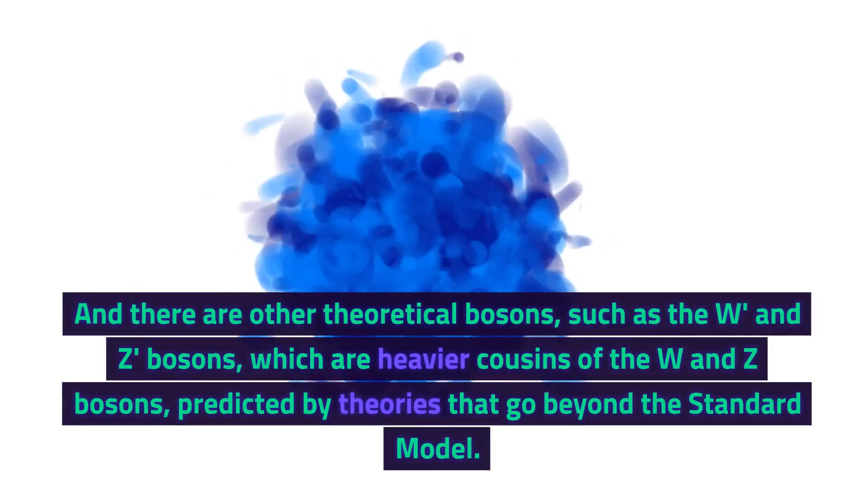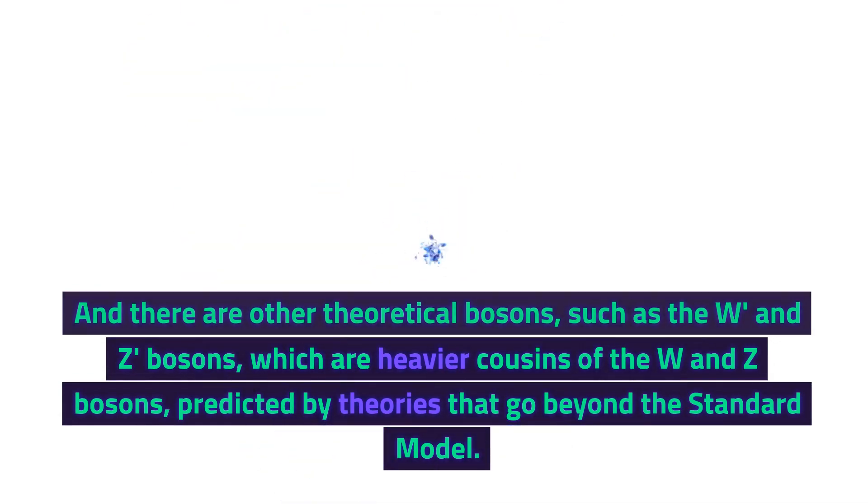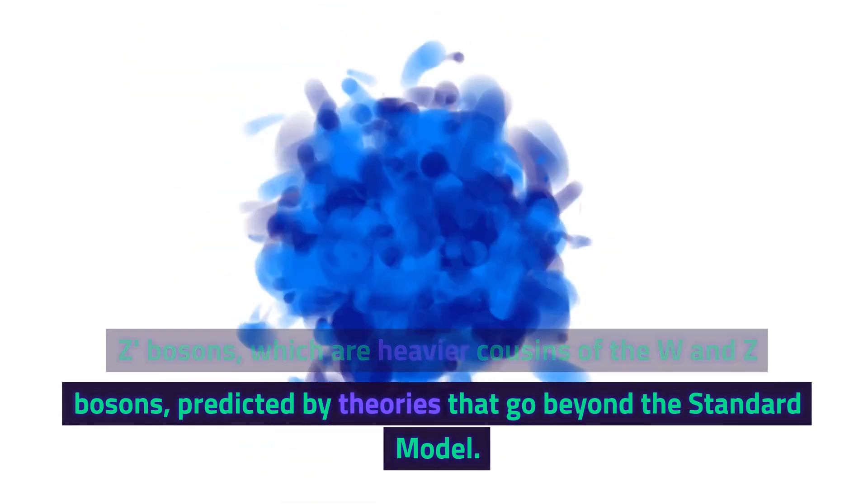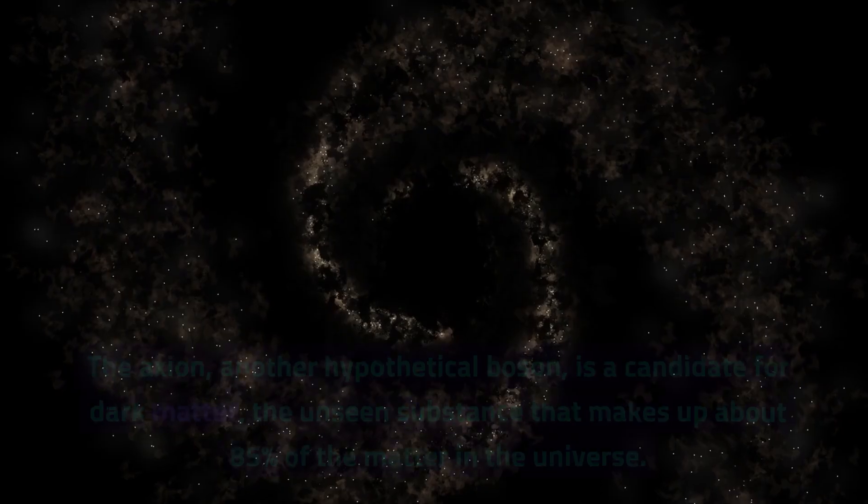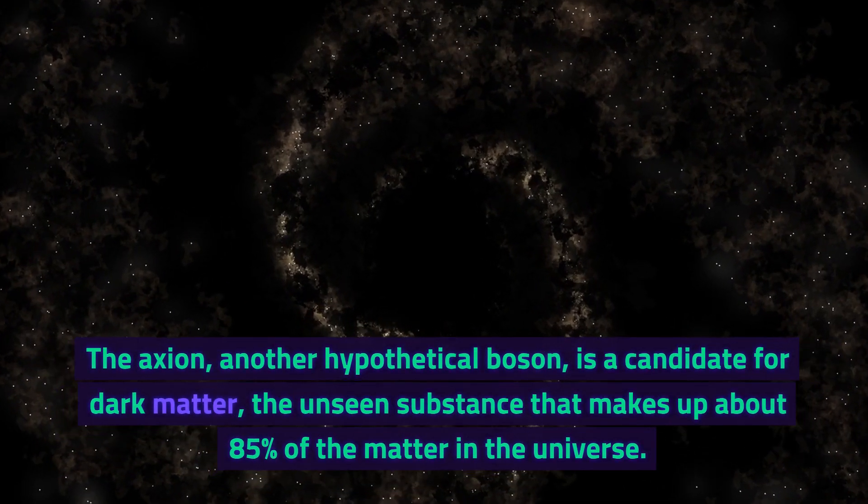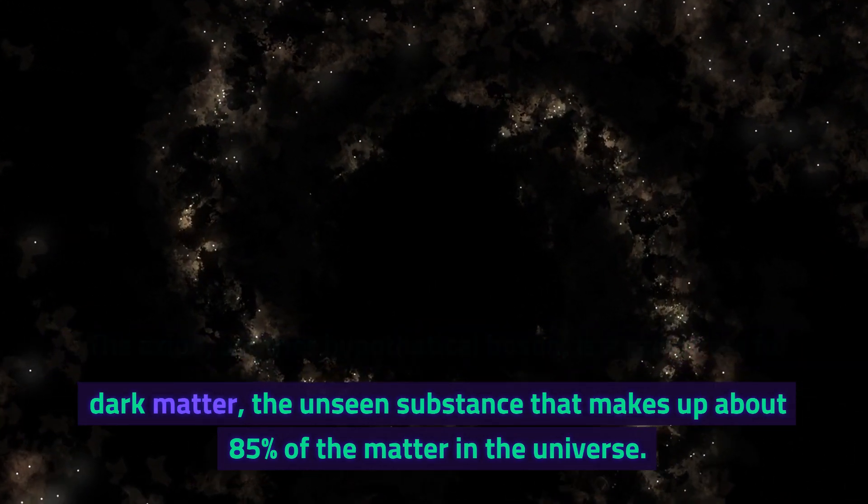And there are other theoretical bosons, such as the W prime and Z prime bosons, which are heavier cousins of the W and Z bosons, predicted by theories that go beyond the standard model. The axion, another hypothetical boson, is a candidate for dark matter, the unseen substance that makes up about 85% of the matter in the universe.